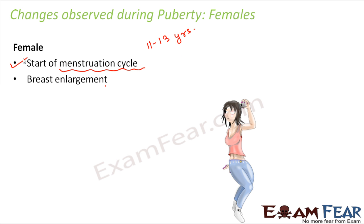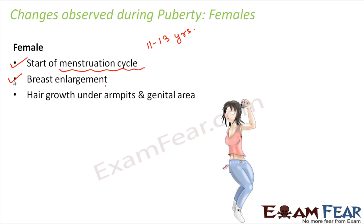Other changes in females during puberty include breast enlargement — in small girls the appearance of breasts is not noticeable, but as the girl grows up the enlargement of breasts becomes visible. There is also hair growth under armpits and in the genital area, similar to what is observed in males.